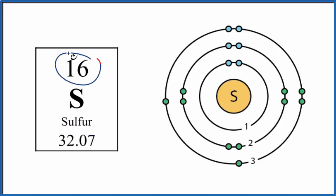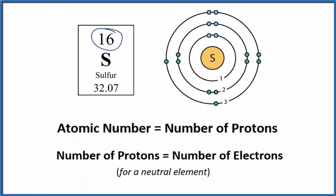Sulfur is atomic number 16 on the periodic table. What that means is that the atomic number equals the number of protons. So we have 16 protons in the nucleus of the sulfur atom here.